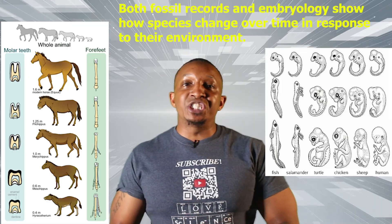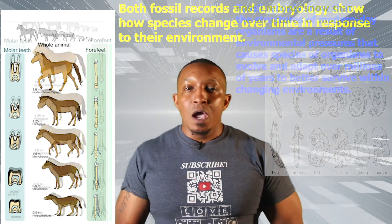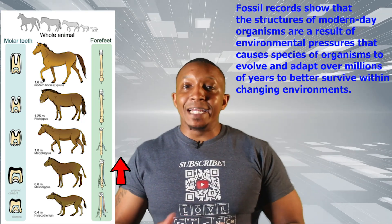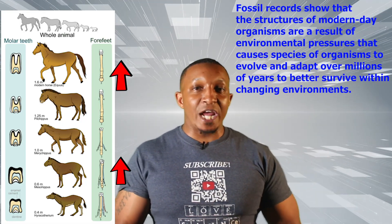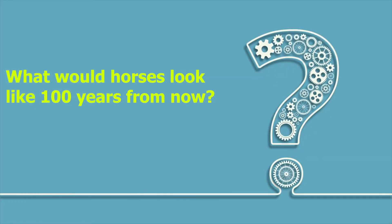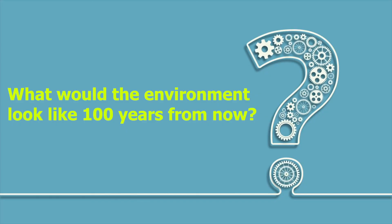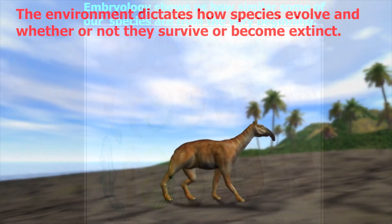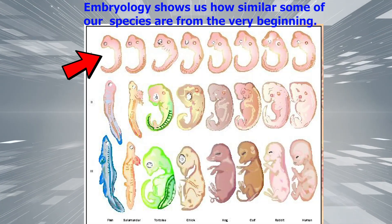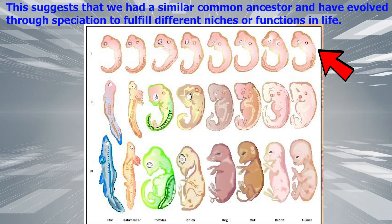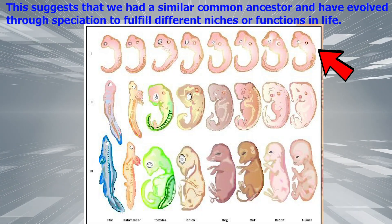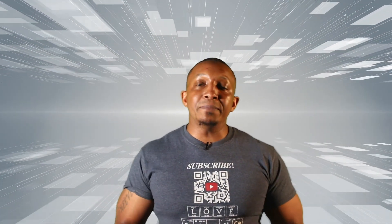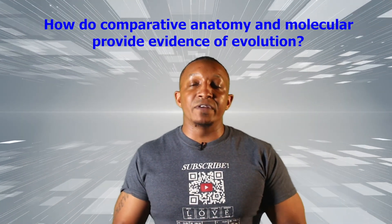In summary, both fossil records and embryology show how species change over time in response to their environment. Fossil records show that the structures of modern-day organisms are a result of environmental pressures that cause species to evolve and adapt over millions of years. The environment dictates how species evolve and whether they survive or become extinct. Embryology shows us how similar some species are from the very beginning, suggesting a common ancestor and evolution through speciation to fulfill different niches in life. Stay tuned for part 2, where we take a deep dive into how comparative anatomy and molecular biology provide evidence of evolution.